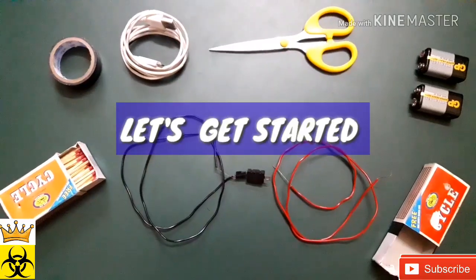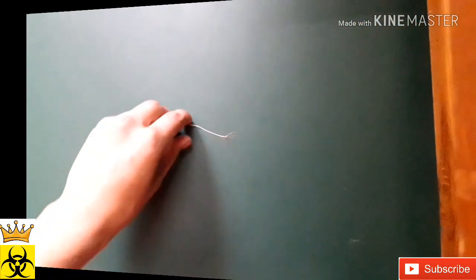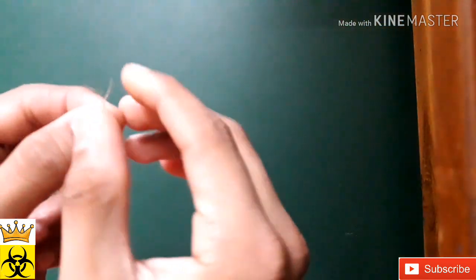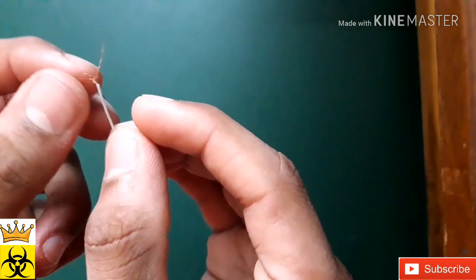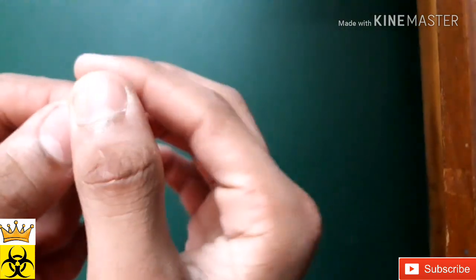Next, we want a piece of wire from the USB cable. We need to separate its threads from each other to get a single thread of wire.